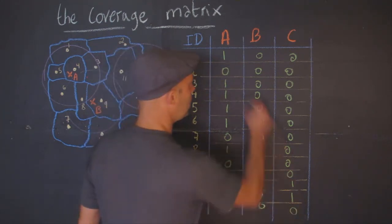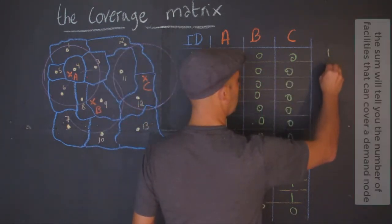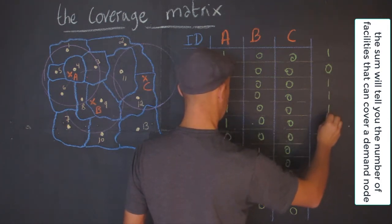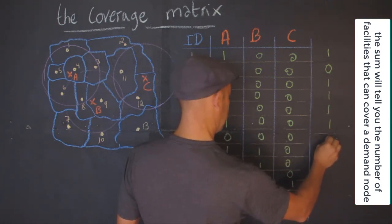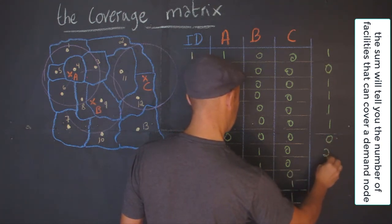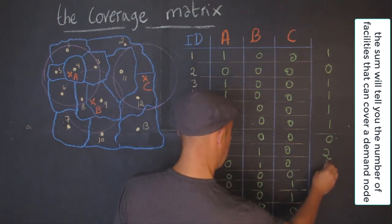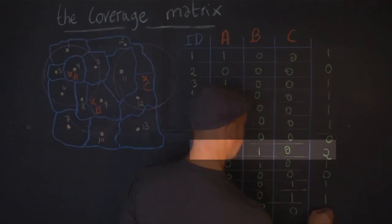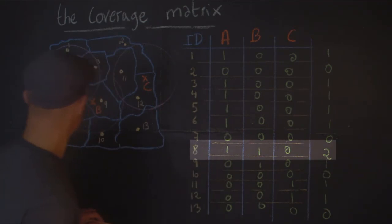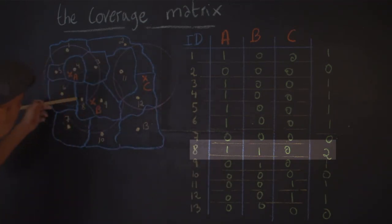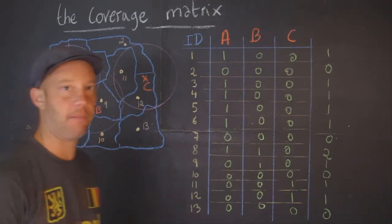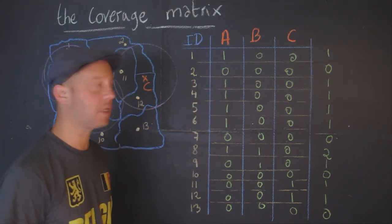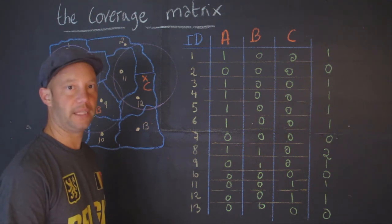We can also make a sum here: one, zero, one, one, one, one, zero, two, one, one, one, one, zero. Now there is one node that's interesting, and that's node 8. You see indeed that node 8 can be served by both A and by B. So that is the concept of the coverage matrix that we will use later on for these models, as you will see.